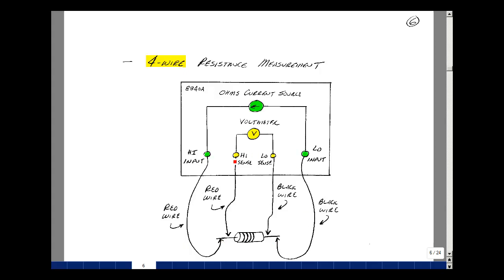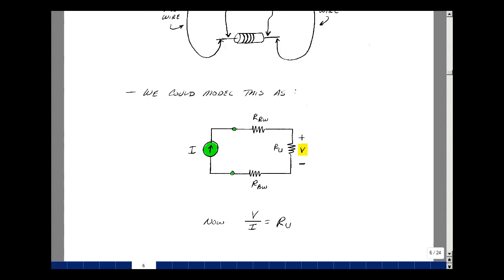well then we don't have that drop across the wires included with our measurement. And this is shown at the bottom of the page. So now we have the current going through our sample and then bringing the wires over here to measure the voltage across it. So now the ratio of this voltage to this current is just the value of the resistance. This does take two more wires, and we wouldn't normally do this unless the resistance is in the 10-ohm or less range.